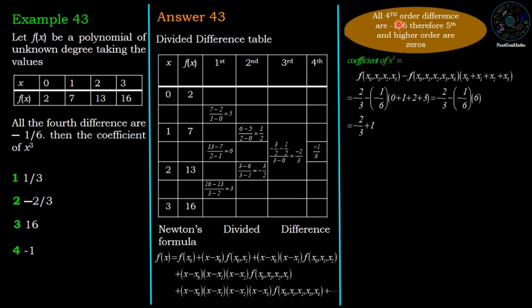Now all the fourth order differences are minus 1 by 6, therefore fifth order and higher order differences are zeros.